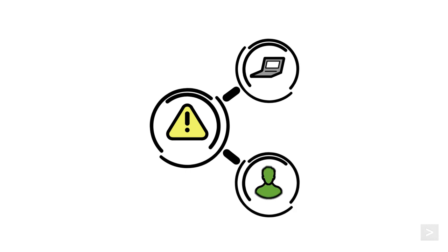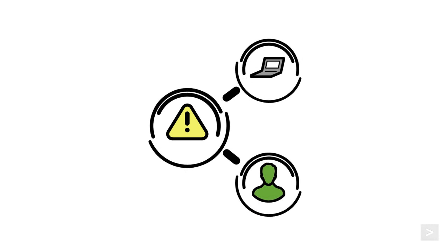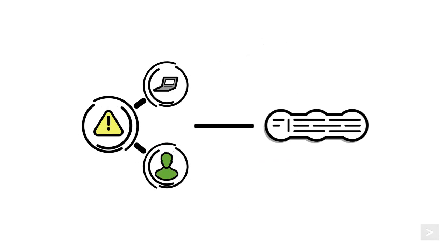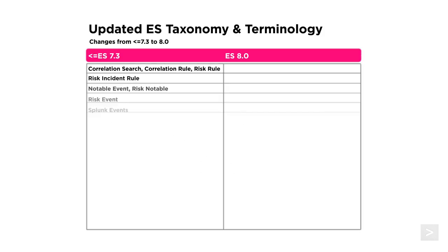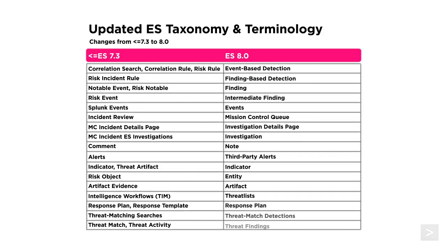In previous Splunk Enterprise Security releases, a correlation search could output a notable, which could be added to an investigation. In this version, notable events are now referred to as findings. Correlation searches, correlation rules, and risk rules become event-based detections, and risk incident rules contribute to finding-based detections.